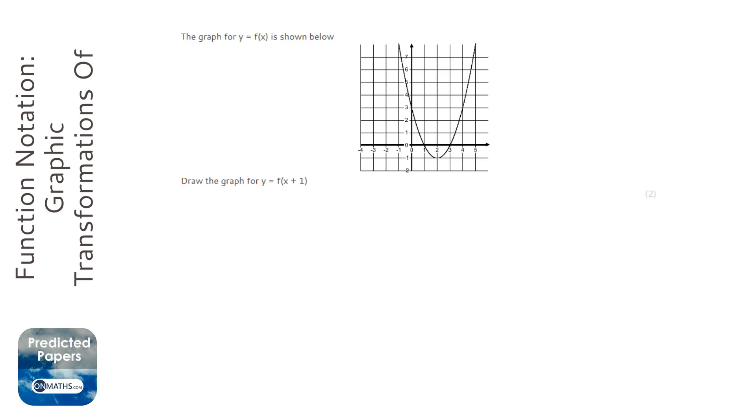So here we've got a plus one, which means it's going to shift either left or right. When we're adding or subtracting within the bracket, it's going to move left or right, and the whole function, the whole equation, the whole graph will move to the left or right.